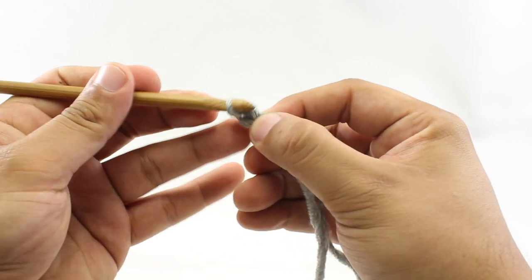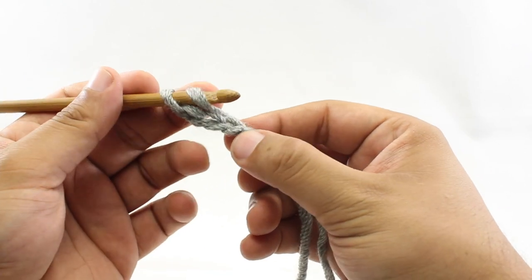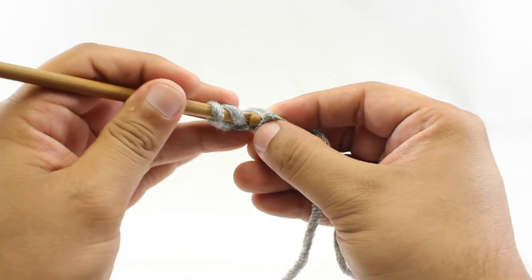Now for step two, we're going to yarn over and we're going to insert our hook into that first chain that we just made.